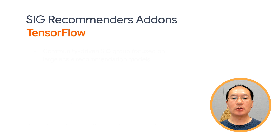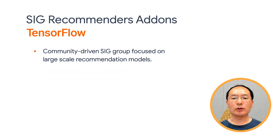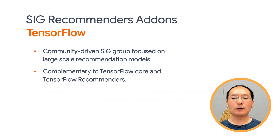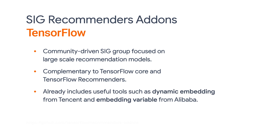Lastly, I'll briefly mention that we also have a Recommendation Add-on SIG group — a community-driven special interest group that focuses on training and deploying large-scale recommendation models. For example, how to train large-scale sparse models, how to deal with dynamic embeddings, etc. The contributed code there is complementary to TensorFlow Core and TensorFlow Recommenders, and includes implementations of useful tools such as dynamic embedding and embedding variables contributed by the community.